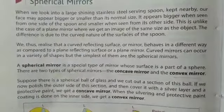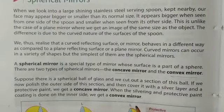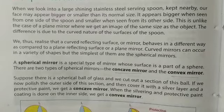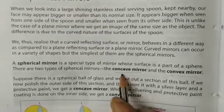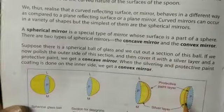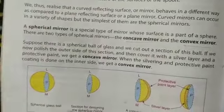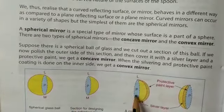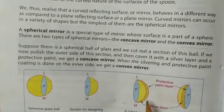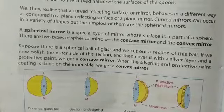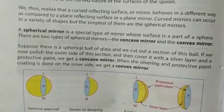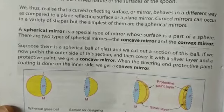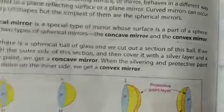We are having spherical mirrors. A spherical mirror is a special type of mirror whose surface is part of a sphere. We are having concave mirror and convex mirror. This can be understood with the help of a ball. You can see this part is said to be the concave mirror, and this is said to be the convex mirror, with the reflective band layer.